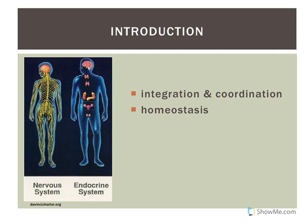Both the nervous system and endocrine systems are involved in integration and coordination. Both act as control centers in certain reflexes where they can interpret information, integrate it, and tell certain effectors what to do to respond to a particular change. So both are very important in homeostatic balance. They are similar in that they both use signaling molecules.